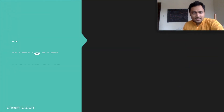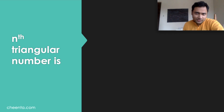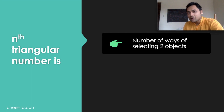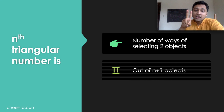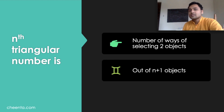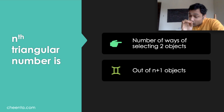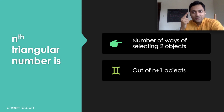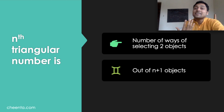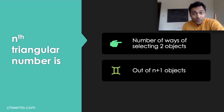So what is our problem? Now that we understand triangular numbers — the sequence 1, 3, 6, 10, and so on — our problem is this: the nth triangular number is the number of ways of selecting two objects out of n+1 objects. So the 100th triangular number will be the number of ways of selecting two objects out of 101 objects. We will not use any formula; we will use a beautiful, elegant visual reasoning to solve this problem.